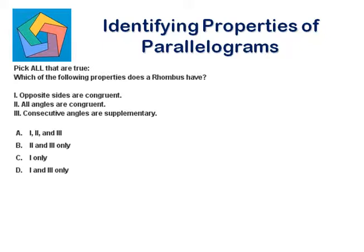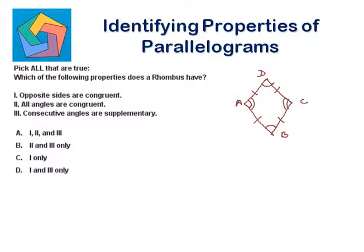Next problem. Pick all that are true: which of the following properties does a rhombus have? A rhombus has all sides equal, and opposite angles are congruent in a rhombus. Opposite sides are congruent since all sides are congruent. However, all angles are not congruent in a rhombus — only opposite angles are congruent.